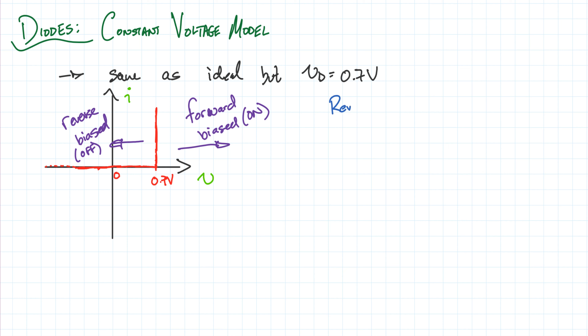We'll talk about the reverse bias characteristics and then the forward bias, giving us two modes of operation. You'll notice this is basically the exact same setup as the ideal diode — it's just shifted over by 0.7 volts.